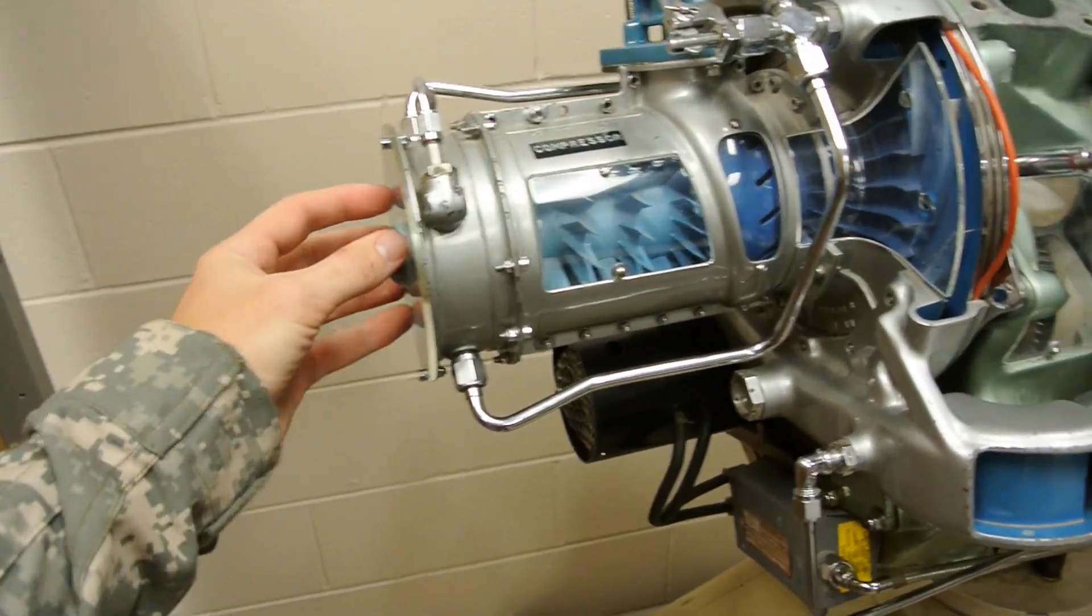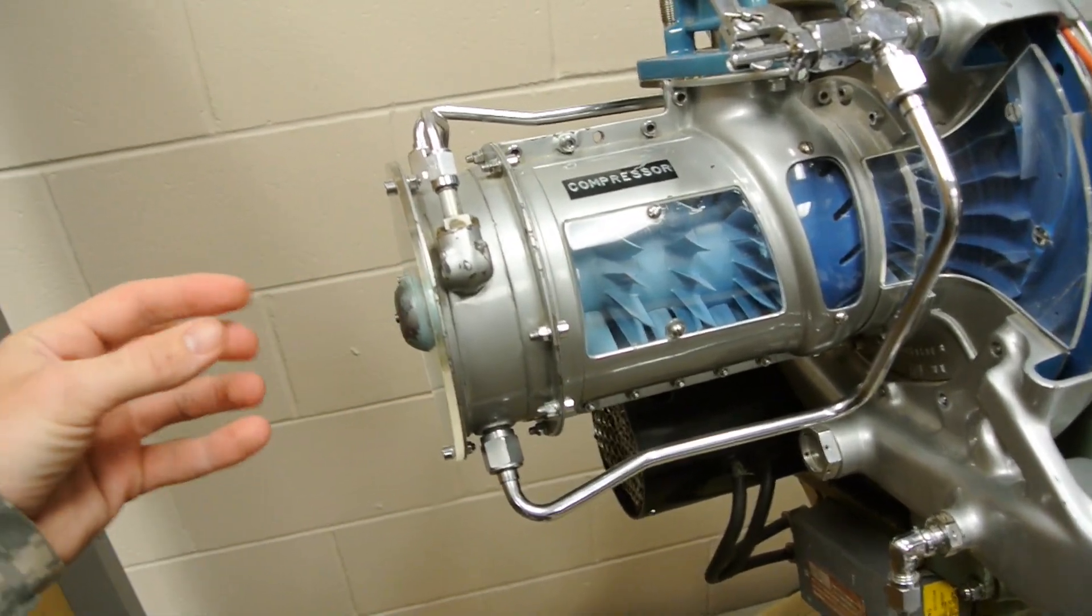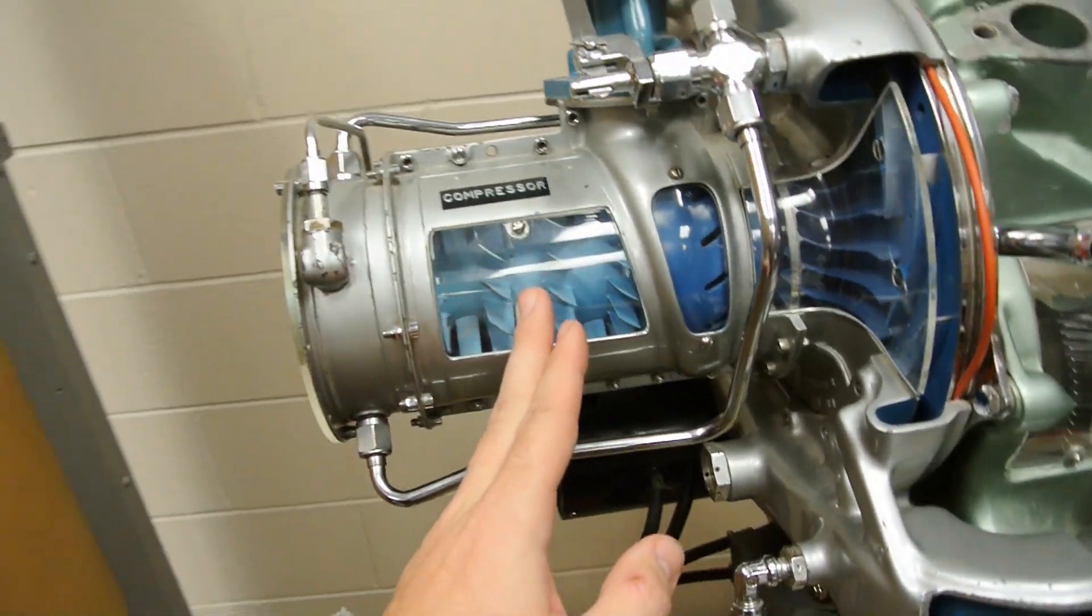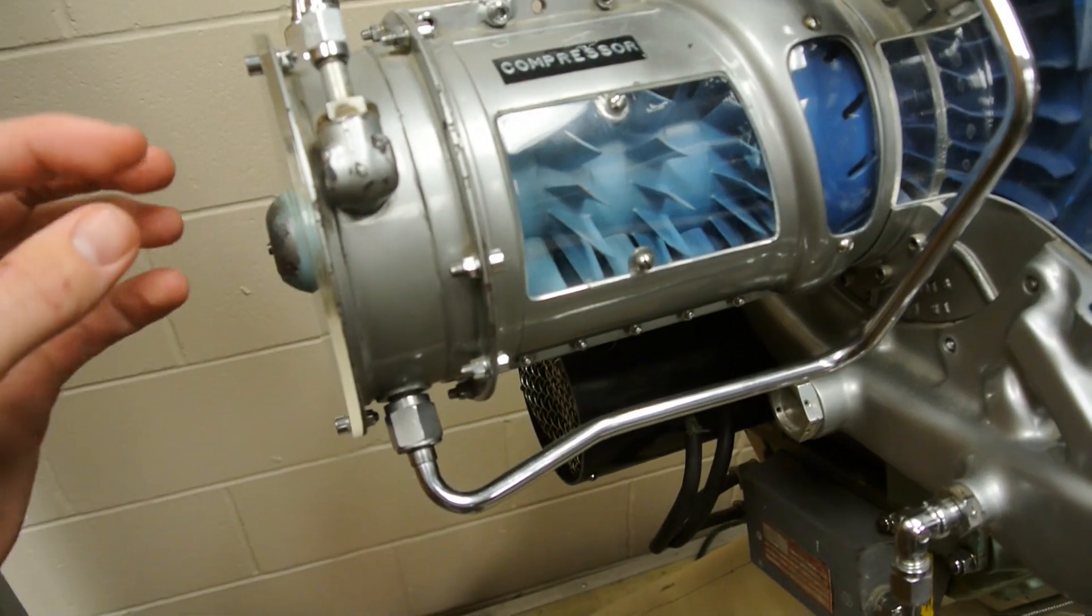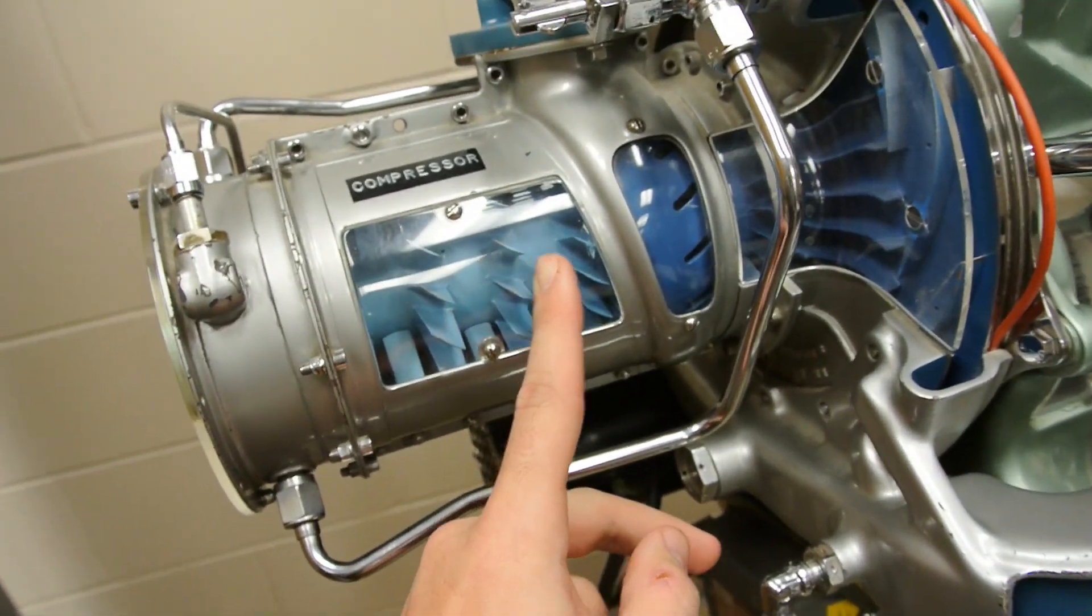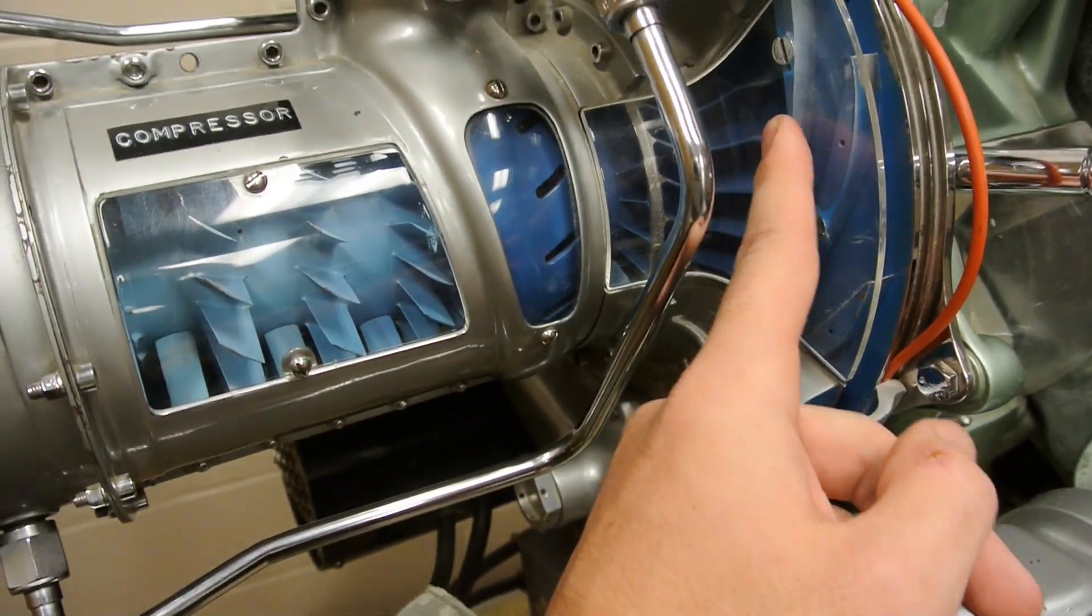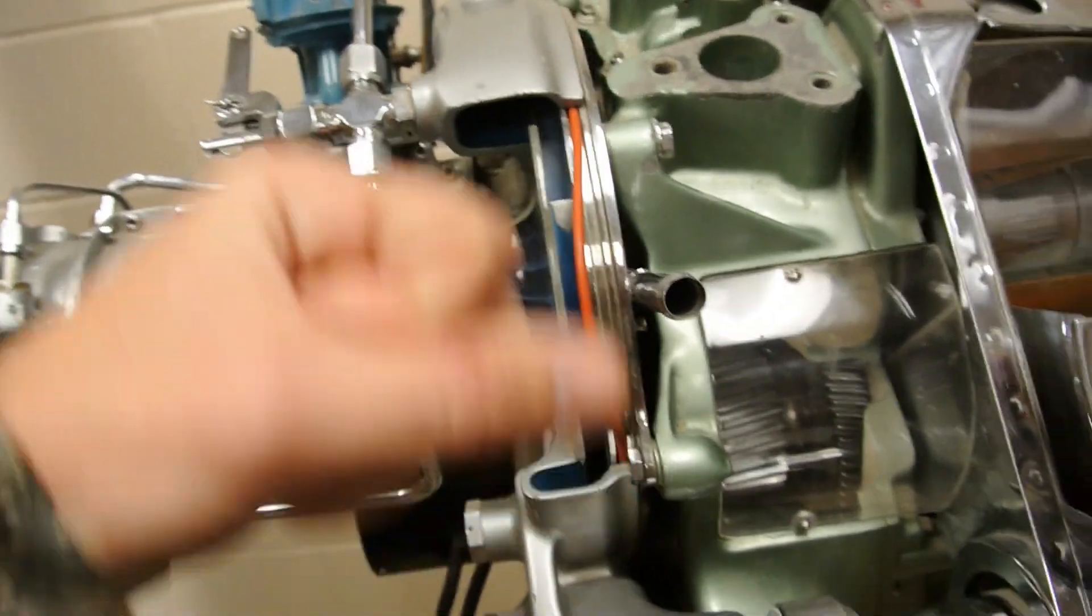So the air comes in here, this is the blue part, and it's just for display purposes only, it's not really painted blue. It's compressed by this axial compressor here, and it actually tapers outwards, so the airspace is more and more confined as it travels in. Then it hits this centrifugal compressor here and it's spun outwards.